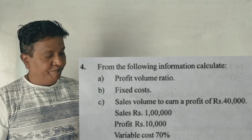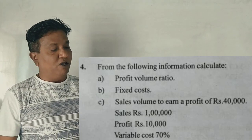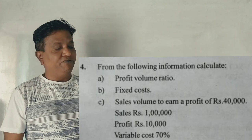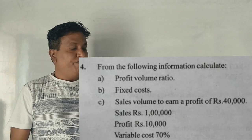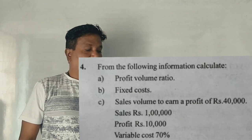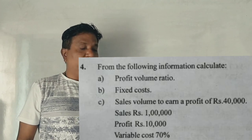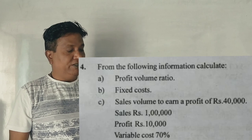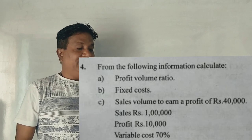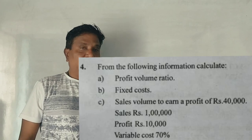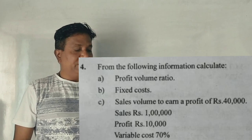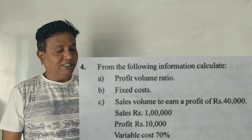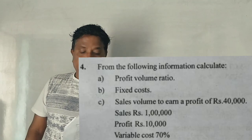From the following information, calculate the profit volume ratio, fixed cost, and sales volume to earn a profit of ₹40,000. Given: sales ₹1 lakh, profit ₹10,000, variable cost 70 percent.